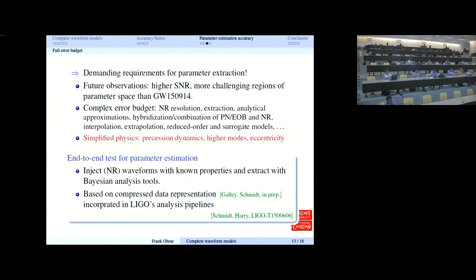Precession dynamics are simplified by using an effective precession spin. Higher modes are often either not included at all, or again, simplified. There's no eccentricity in these waveform models that I've talked about. So how can we quantify all these effects together? Fortunately, there's been a lot of work recently to prepare an end-to-end pipeline where we can test this by injecting our best waveforms, again derived or directly using numerical relativity waveforms. We inject them into either LIGO noise or zero noise, but use the LIGO noise curve and perform the exact same parameter estimation analysis that we do on real signal candidates. We just see what happens. Do we recover what we know we've injected?